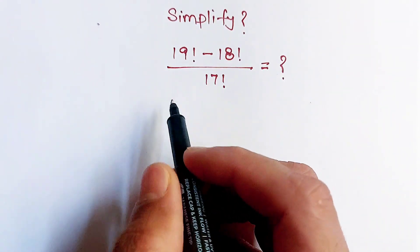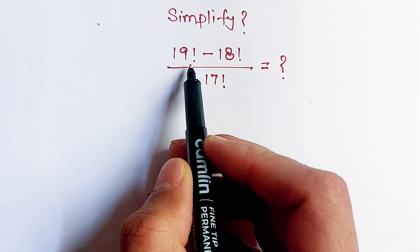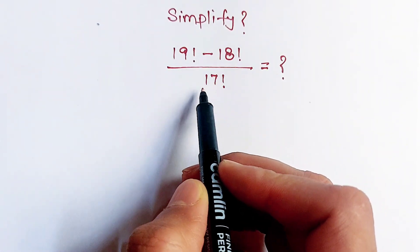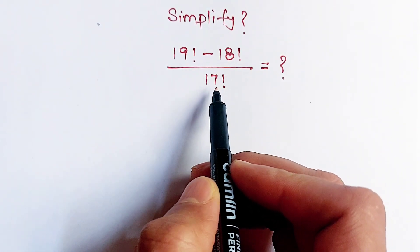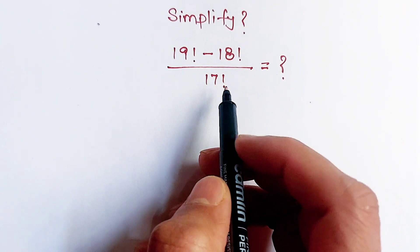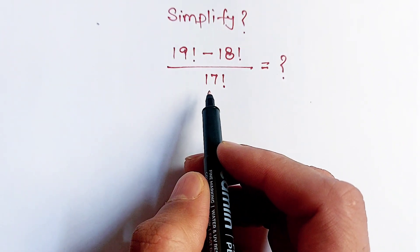Hello dosto, the question is 19 factorial minus 18 factorial divided by 17 factorial. We have to simplify this question. Let's find out how we will do it.